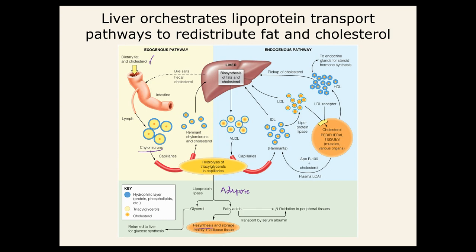VLDL is the lipoprotein that takes fats and cholesterol from the liver to the capillary through the blood. And HDL — high-density lipoprotein — helps pick up cholesterol from the peripheral tissues and bring it back to the liver. That's why it's considered the good cholesterol: it removes cholesterol out from circulation.